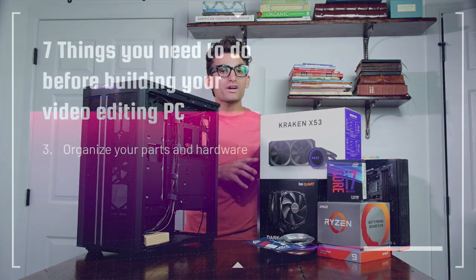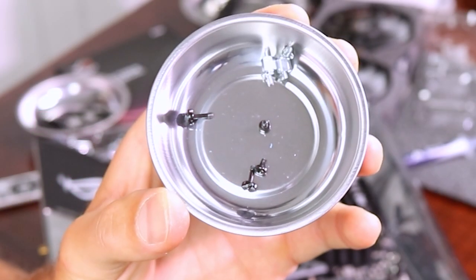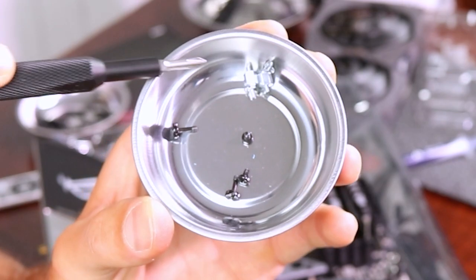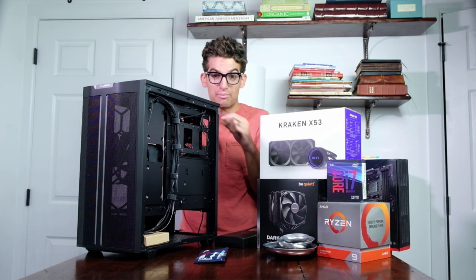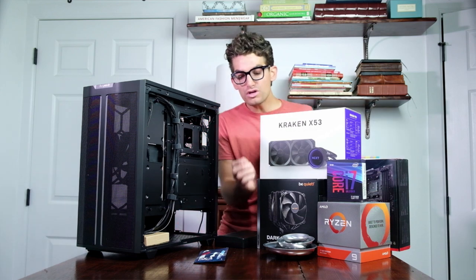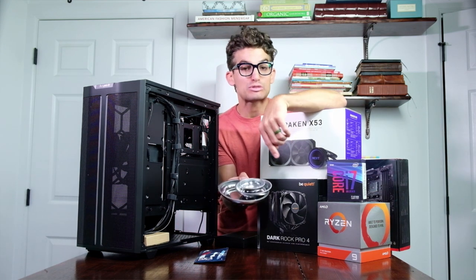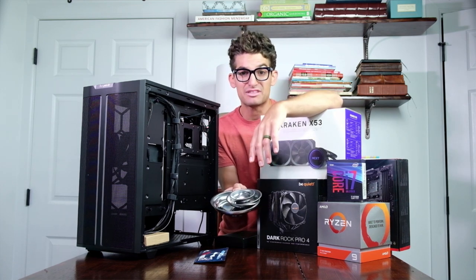Number three is to organize your screws and hardware. If you're not careful, you can easily have components, screws, and accessories all mixed up. It's best to pick up some organizers — a silicone mat, a plastic bin with slotted compartments, or magnetic screw trays, which are super handy and come in multiple sizes. You can snag these on Amazon — I'll link them in the description below.